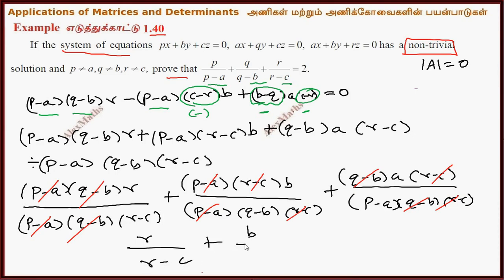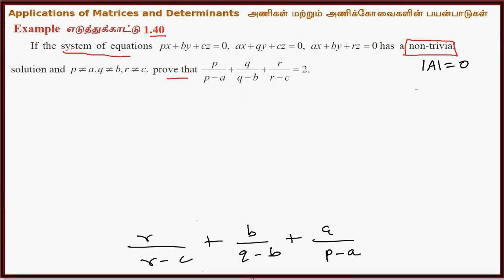Adding B divided by Q minus B, plus A divided by P minus A — this balances out. So the whole expression with the determinant value equal to 0 is confirmed.